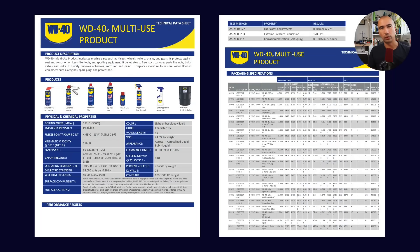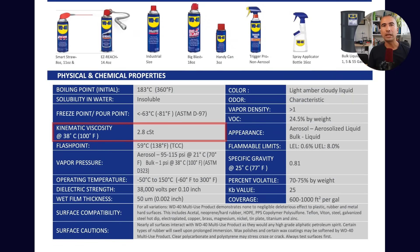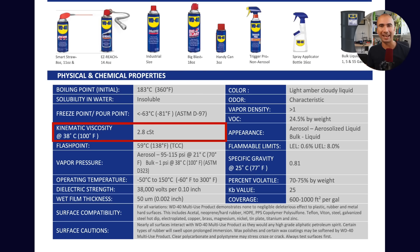Let's take a look at the actual technical data sheet issued by WD-40. They can tell you a little bit about what they intend the product for. One thing of note: it does say that the product lubricates moving parts, so WD-40 is indicating that it is some kind of lubricant. But if you scroll down further, you'll see a kinematic viscosity measured at 38 degrees Celsius. That's not really the industry standard — I think they've chosen it because 100 degrees Fahrenheit is a round number. In industry, we typically measure kinematic viscosity at 40 degrees Celsius, but 38 to 40, we're splitting hairs.